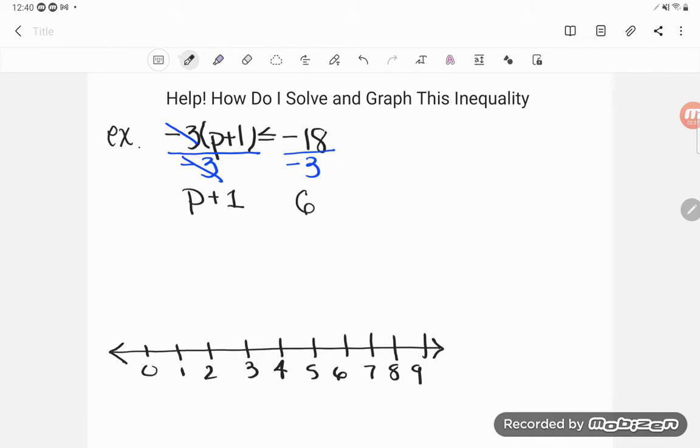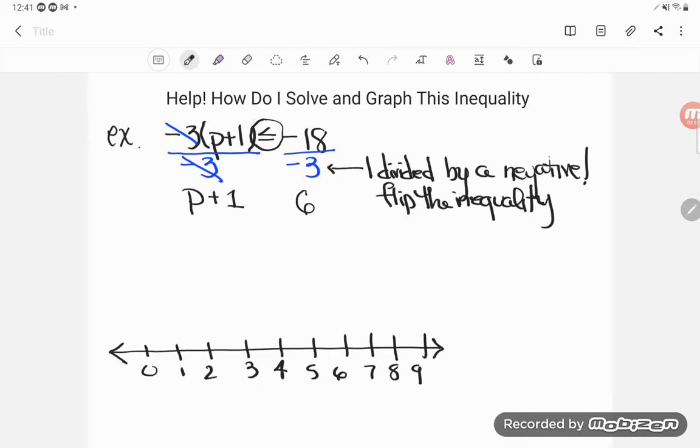Now here's an important part. Circle this, highlight this, whatever you need to do. Get it in your notes. Whenever you multiply or divide by a negative, there is a consequence. So whenever you multiply or divide an inequality by a negative number, oh my goodness, I divided by a negative, I have got to flip the inequality symbol. It actually changes the relationships between the two sides. It makes the bigger side smaller and the smaller side bigger. So if you multiply or divide both sides by a negative, you've got to flip the inequality sign. It did say less than or equal to, I'm going to change it to greater than or equal to. I just flip that guy around.